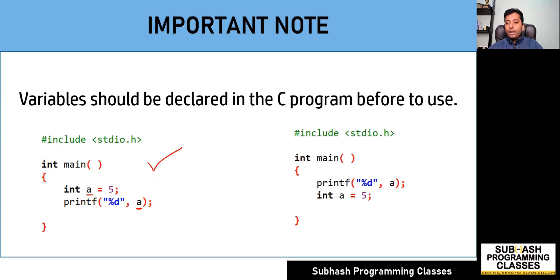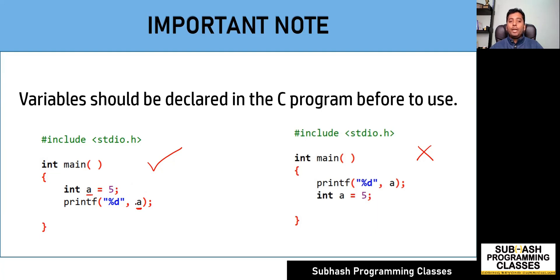In the second case, as you can see, I have already made use of 'A' even before declaring the variable. I am using 'A' in printf and then later declaring the variable 'A' in the next line. So this code will result in a compile-time error. Before using a variable, wherever it is, you must first declare it, and only then you will be able to make use of those variables.